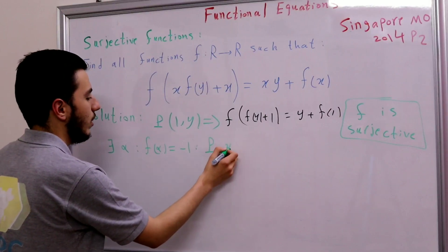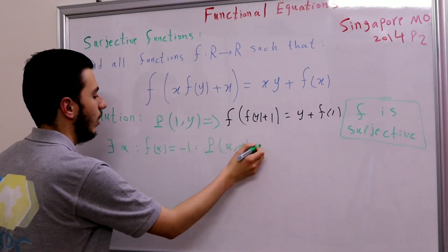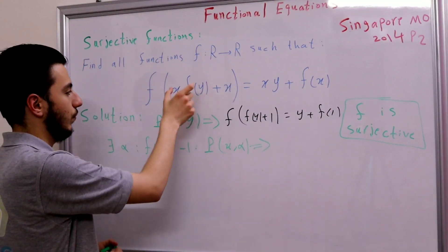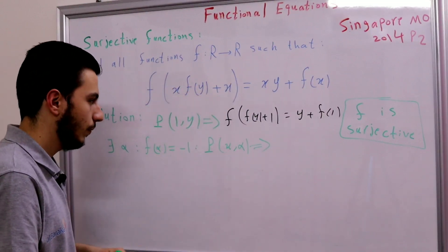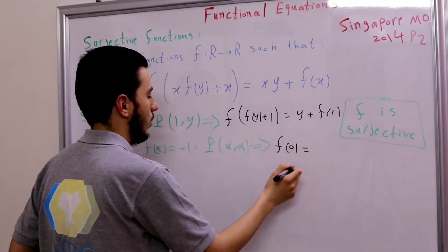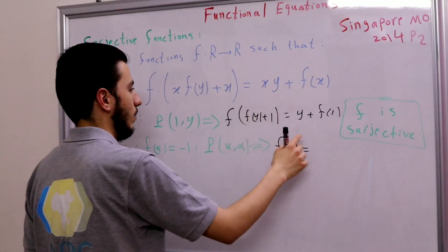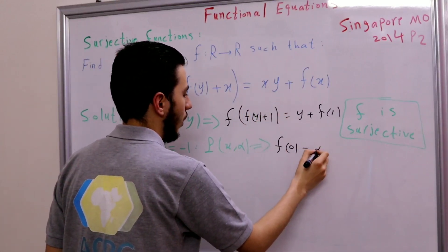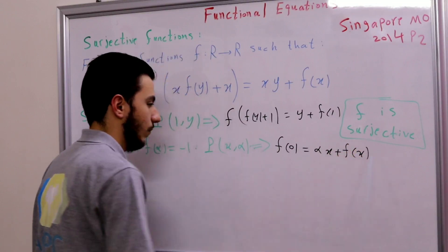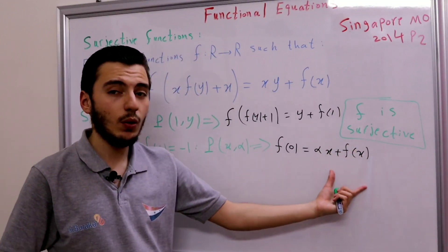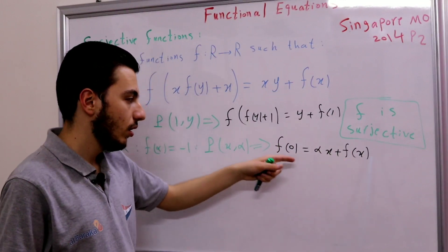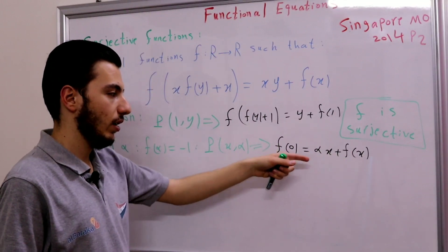Substituting y = α gives us f(0) on the left-hand side. So we get f(0) = x·α + f(x), which means f(x) = f(0) − α·x. Just that simple — we have found our function f.